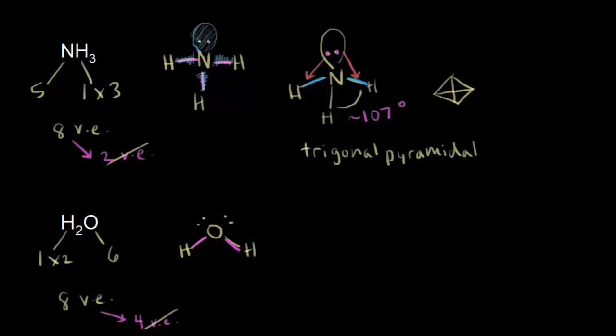Our next step is to count how many electron clouds we have around our central atom. We can think about these bonding electrons as an electron cloud, these bonding electrons as another electron cloud, these non-bonding electrons as a lone pair electron cloud, and the same for the other non-bonding electrons. So once again, we have 4 electron clouds. Those 4 electron clouds are going to attempt to be in a tetrahedral arrangement around the central atom — using VSEPR theory, they repel each other and get as far away as possible.